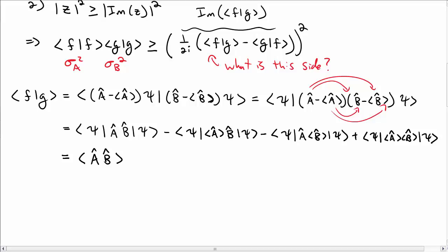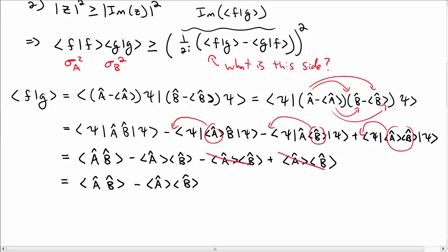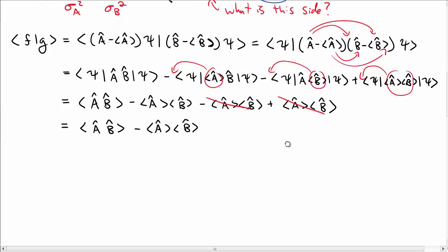The first term is just the expectation value of A-hat B-hat. In the second term, ⟨A⟩ is just a number, so it pulls out giving ⟨A⟩⟨B⟩. The third term gives the same thing. In the fourth term, both expectation values pull out and we get ⟨A⟩⟨B⟩ times the normalization of psi, which is one. After cancellations, ⟨F|G⟩ equals ⟨A-hat B-hat⟩ minus ⟨A⟩⟨B⟩.